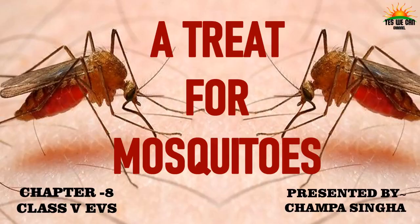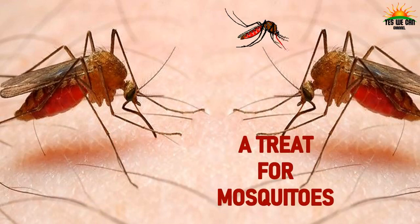Today we are going to study chapter 8 of NCERT class 5 EVS: A Treat for Mosquitoes. First of all, you should understand what it means. A treat means a special food or drink that causes special pleasure or delight. The special drink for mosquitoes is our blood, and if we give a treat to mosquitoes, we are definitely going to suffer.